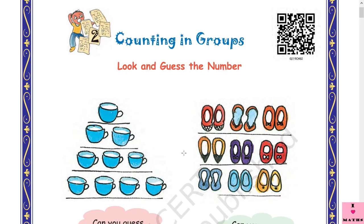So when things are lying in groups, counting the total number of things becomes easier and faster. Wasn't that a nice activity? Let us now read Chapter 2: Counting in Groups. Look and guess the number.